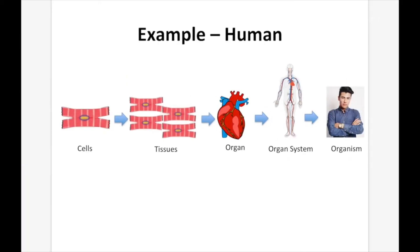In review: our simplest is going to be our cells — specialized cells like muscle cells and nerve cells. Our tissue is going to be our collection of cells, in this case four muscle cells. A collection of tissues all doing a specific thing gives you an organ. Combining multiple organs to perform a specific function gives you an organ system. And all the organ systems working together make up the organism. That concludes our lesson on specialized cells.